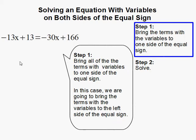In this case, we're going to bring the terms with the variables to the left side of the equal sign. To do so, we're going to add 30x to cancel this out. If we do one thing on one side, we have to do the same thing on the other side.